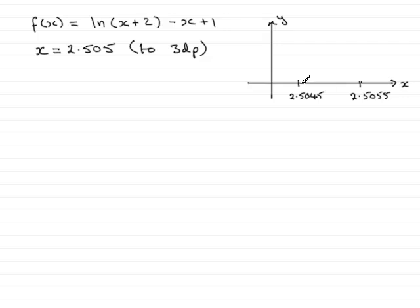Now, what I'm going to look for is a change in sign when I put these values into f of x. And if I get a change in sign, that's going to tell me that the graph has crossed the x axis between this value and this value. And that will tell me that the root would be 2.505 to 3 decimal places, because I've taken the minimum value and the maximum value that this could be.